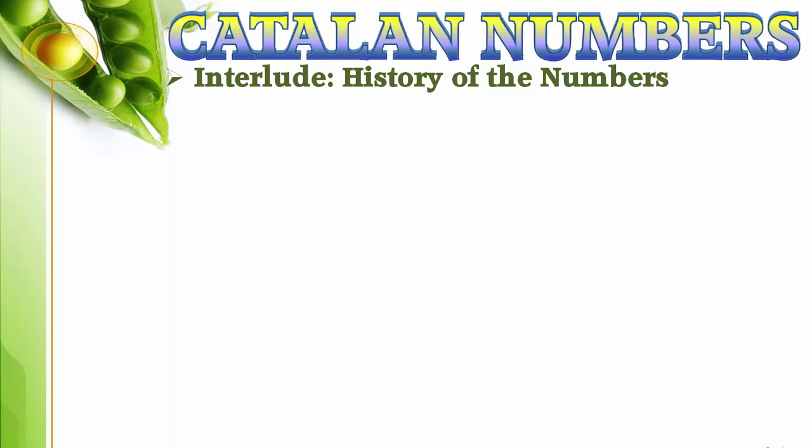You probably wondered why we defined the Catalan numbers using polygon division. There are hundreds of other problems in which the Catalan numbers appear, so what's so special about this one? It turns out that this problem, which is called Euler's polygon division problem, was historically the original problem in which the Catalan numbers first appeared. Let's go on a brief tangent to explore the history and naming of the Catalan numbers.